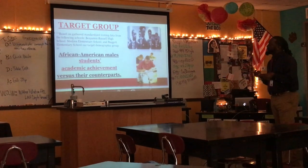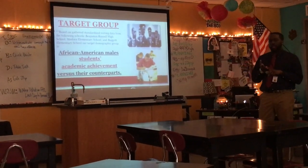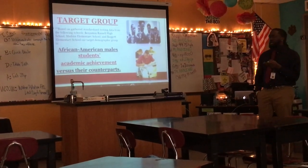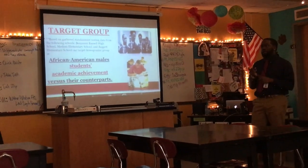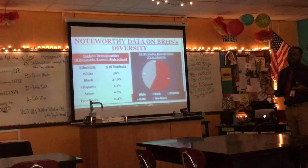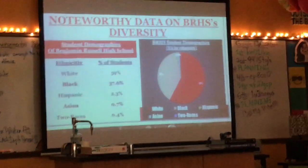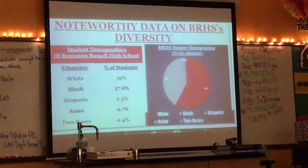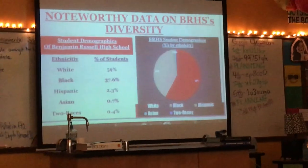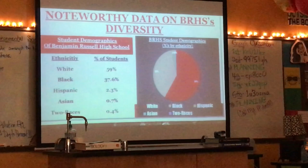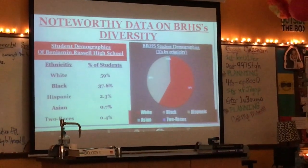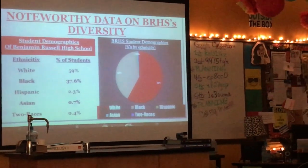The target group for our diversity plan gathered information from Benjamin Russell scores — ACT science scores — Medina Elementary School, and Baggett Elementary School. Our target group was African American male student achievement versus their counterparts of every other ethnicity. At Benjamin Russell, the demographic shows whites at 59%, blacks second at 37.6%, with Hispanics, Asians, and some biracial children as well. Most of our demographic is made up of white and black students, with some diversity in Hispanic and Asian cultures, so there is already a disparity when you look at white and black representation.